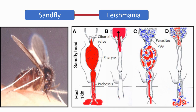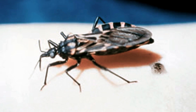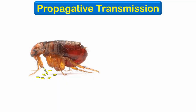The reduviid bug defecates after the blood meal and pathogens are left behind in their excreta near the bite site. The pathogens enter through the site of bite when the patient scratches the bite mark.